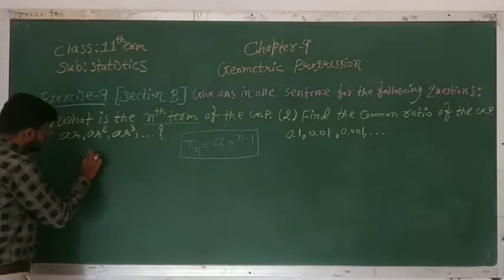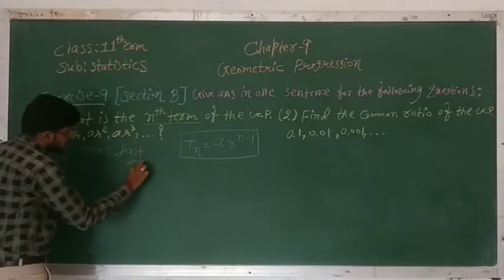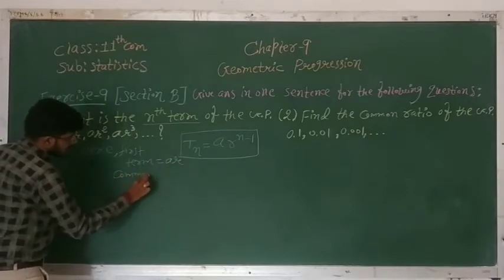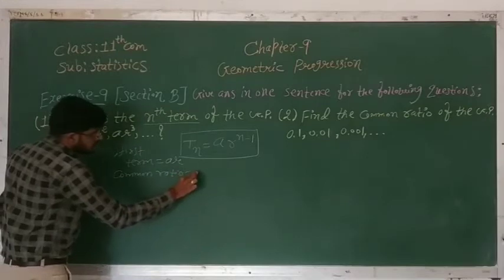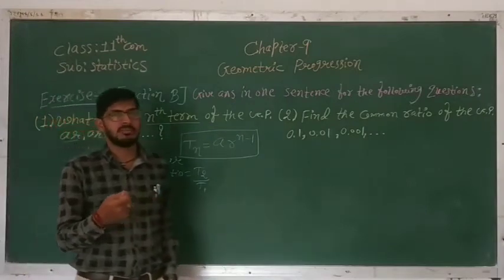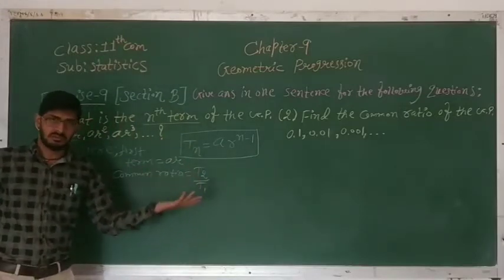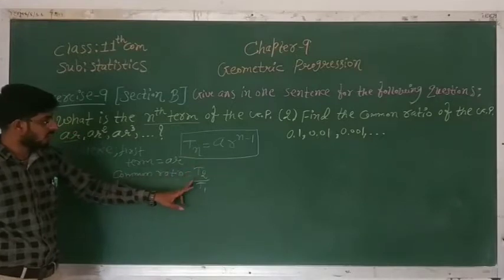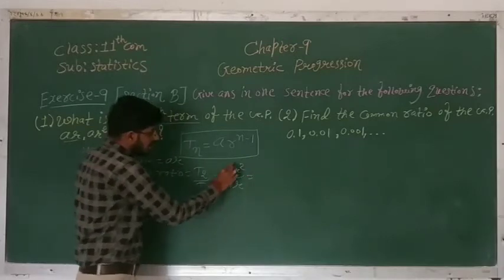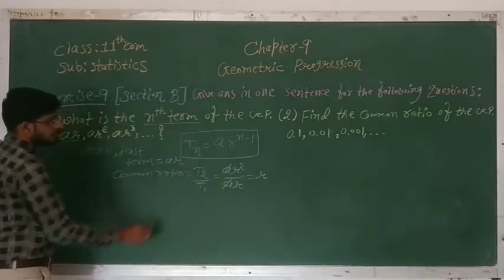Here the first term is equal to AR. The common ratio is equal to T2 upon T1 — that is, any term divided by its previous term. So it is T2 upon T1, which is AR² upon AR. AR² upon AR gives R. So the common ratio is R.